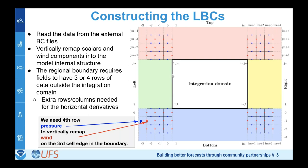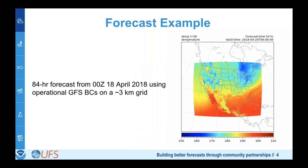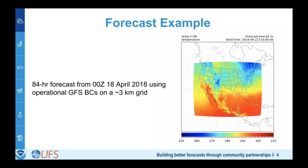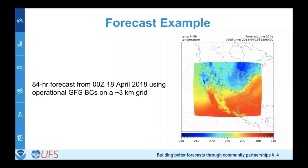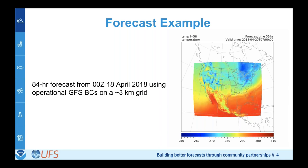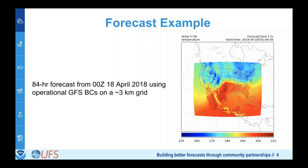Here's an example of an 84-hour forecast on a three-kilometer grid using lateral boundary and initial conditions from the GFS, from mid-April 2018. The 0Z run goes out 84 hours. The entire point of this particular loop is just to show that the model integrates all the way through — things look generally correct, and we see synoptic features that are meteorologically relevant.